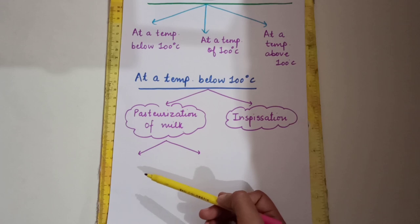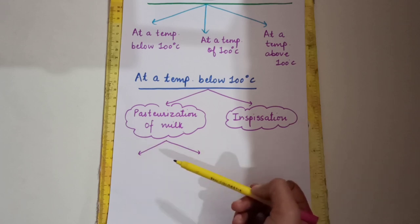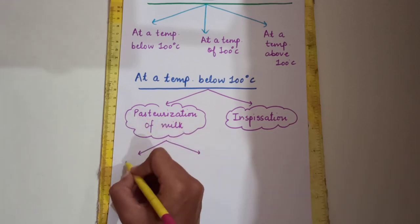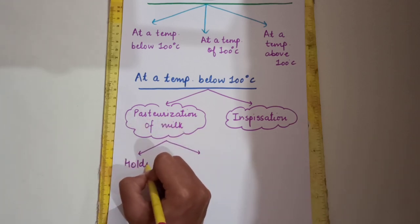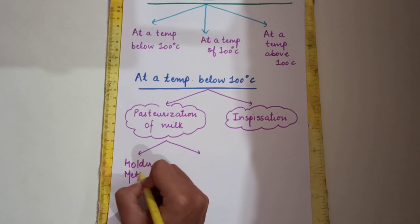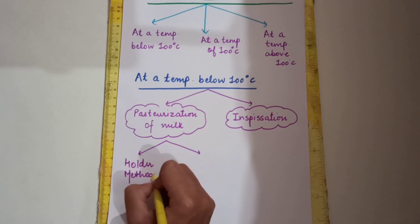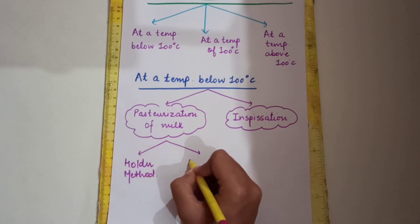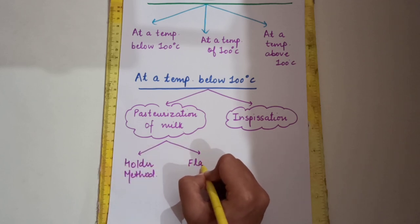For pasteurization of milk, we have two methods: one is the Holder method and the other one is the Flash method.